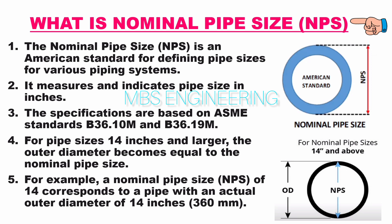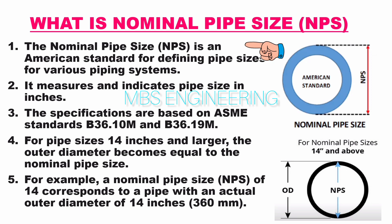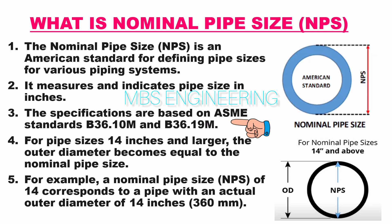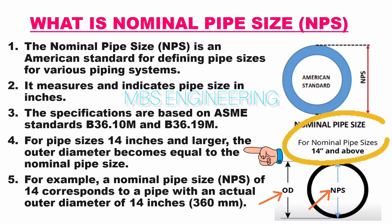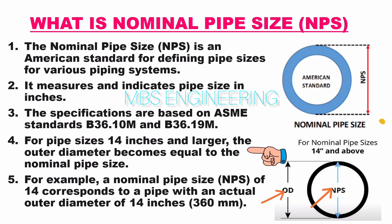Next, we learn about nominal pipe size, NPS, for pipes above 14 inches. NPS is an American standard for defining pipe sizes for various piping systems, measuring and indicating pipe size in inches. Specifications are based on ASME standards B36.10M and B36.19M. For pipe sizes 14 inches and larger, the outer diameter becomes equal to the nominal pipe size, NPS.